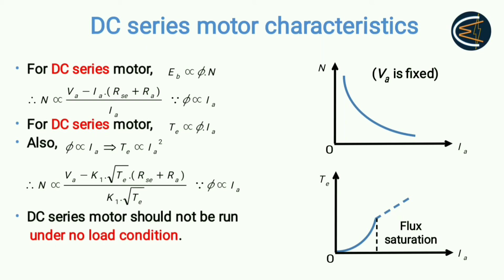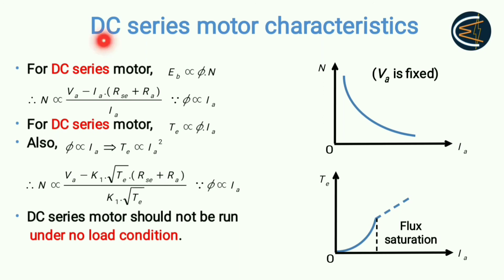When the load is very light or there is no load, the speed becomes dangerously high, which is not acceptable. Therefore, a DC series motor is always run with a certain amount of load — that is why it is always mechanically coupled to a load, such as via a belt mechanism. It is never kept unloaded.